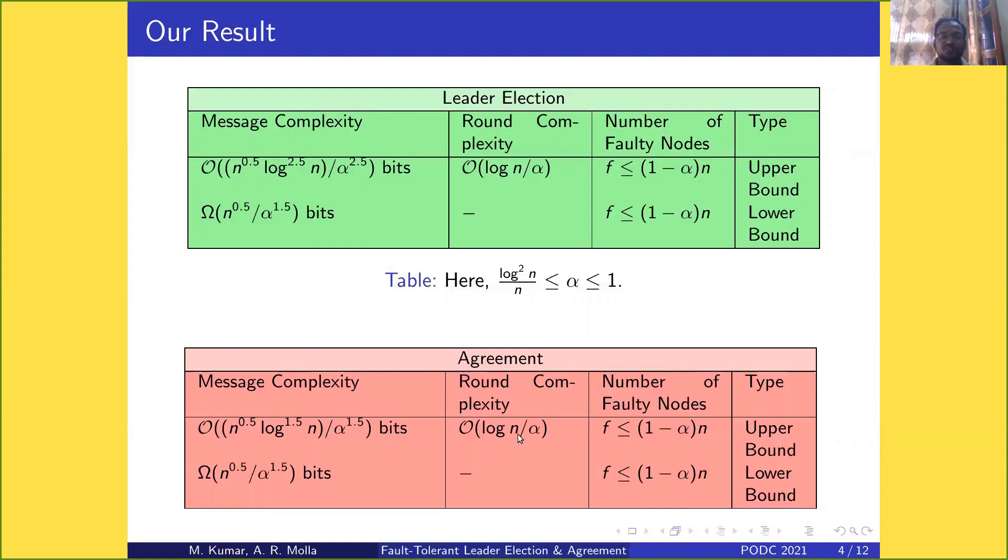Round complexity is the same in both cases. For the lower bound, we have an optimal lower bound with α^1.5, and only the log factor is different, so we possess optimal lower bound.